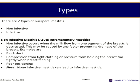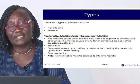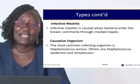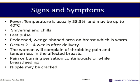In non-infective mastitis, milk not flowing causes inflammation from within — from a blocked duct or compression or poor positioning. In infective mastitis, a bacteria has entered and is causing infection. Common causative organisms in mastitis include Staphylococcus aureus, Staphylococcus epidermidis, and Streptococcus.